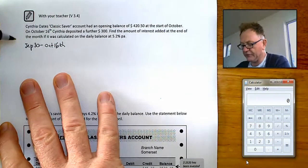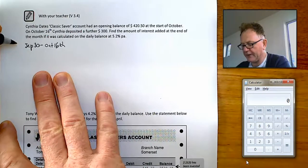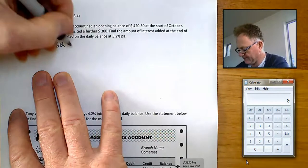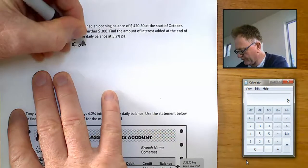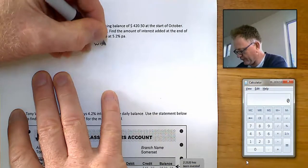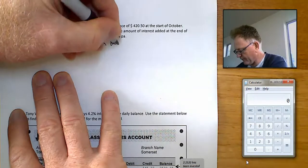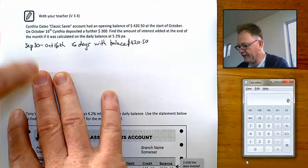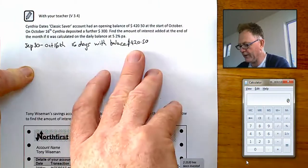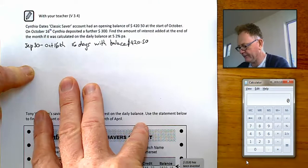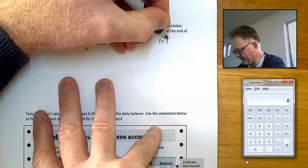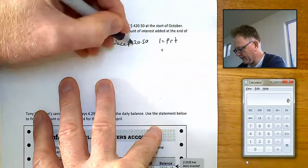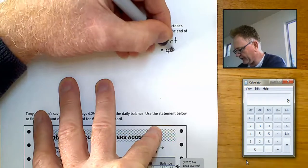And that would make, you could use a table of dates if you're unsure about this, but that would make 16 days when her balance was this amount. And we can work out how much interest she gets on this amount for 16 days. Use I=PRT. The amount invested was $420.50.